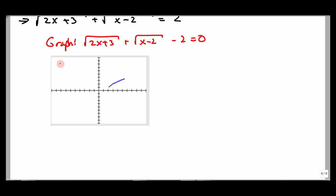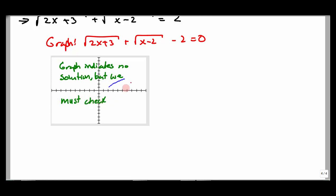The graph indicates no solution, but we must check by hand, because it's possible the graph comes out further and eventually crosses somewhere outside my viewing window.